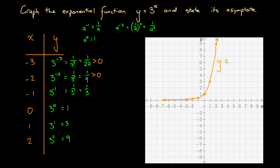We can label this as y equals 3 to the power of x. We've now graphed this exponential function. It then asks us to state its asymptote. Let's quickly review what an asymptote is. An asymptote describes the behavior of this curve where, as x goes to infinity or x goes to minus infinity, if y gets closer and closer to a certain value but never quite reaches that value — specifically in this example, y becomes closer and closer to 0 — then we can say the asymptote of this curve is the line y equals 0.